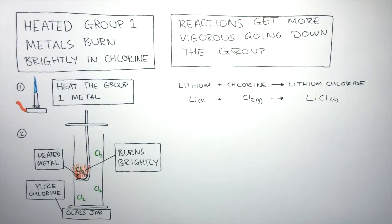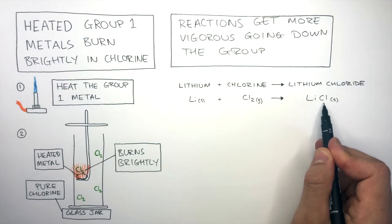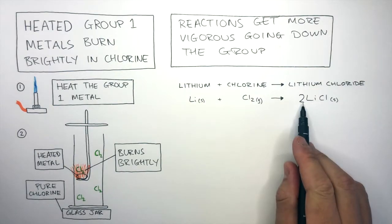This reaction is not balanced, so we need to balance it. There are two chlorines on the left and one chlorine on the right. These need to be the same number, so we put a big 2 in front of the LiCl. There are now two chlorines on the right.